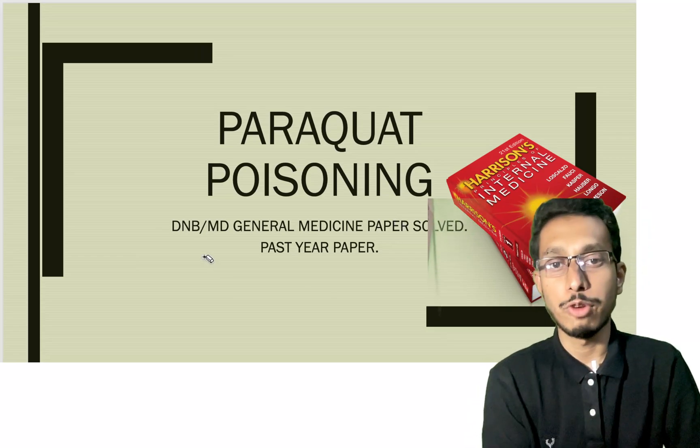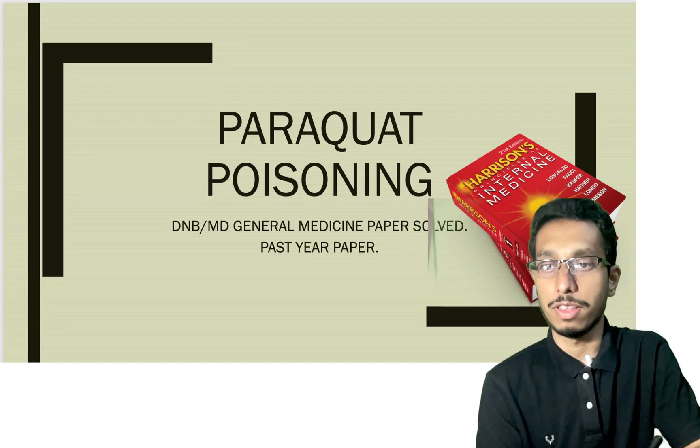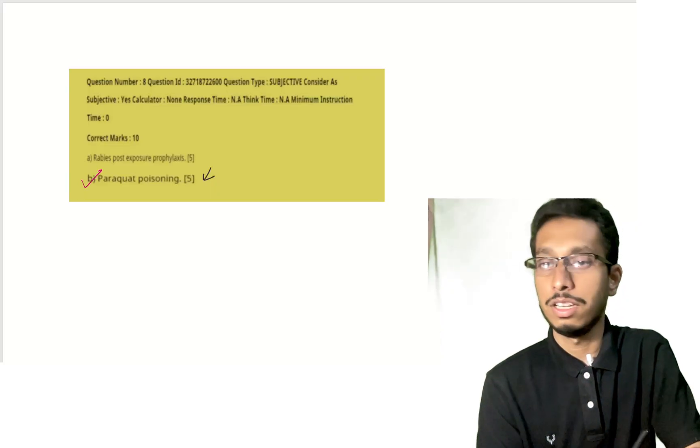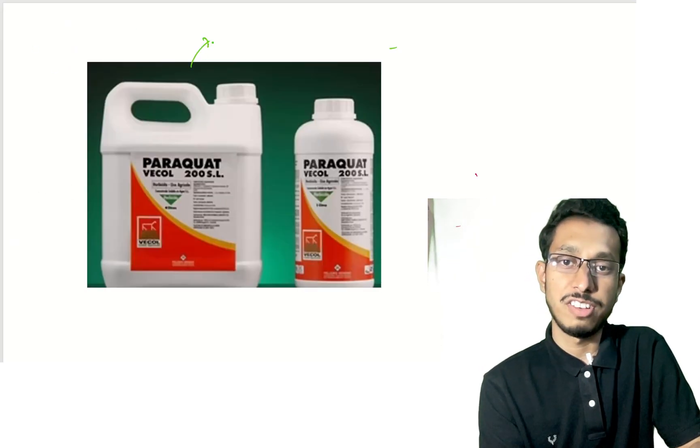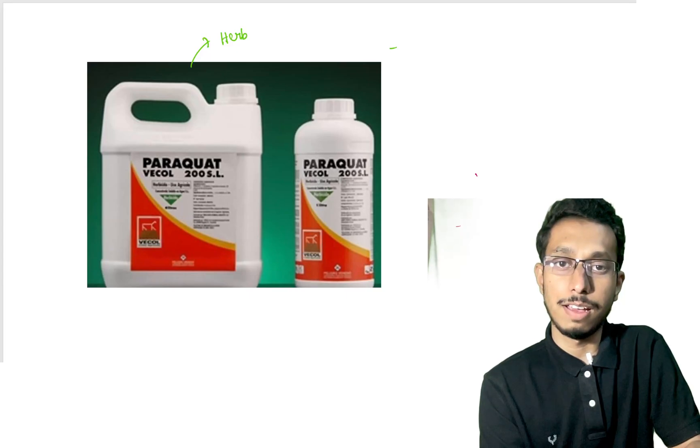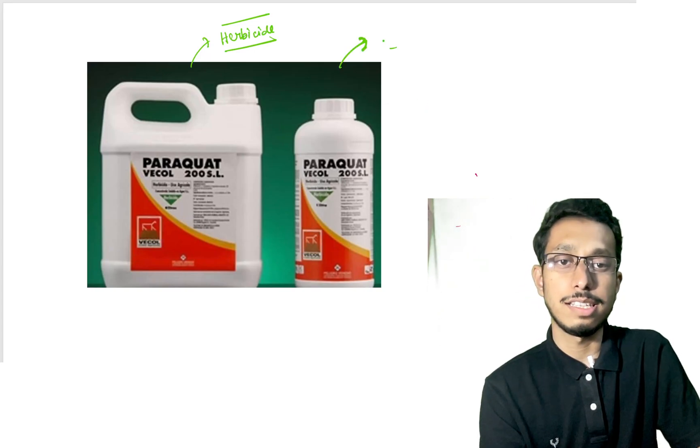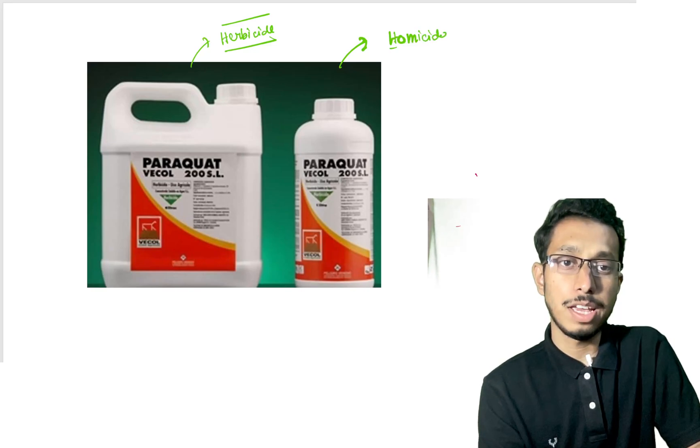Welcome to this video where we'll discuss a DNB past year paper question about paraquat poisoning. Paraquat is a herbicide mainly used in agriculture. The mechanism of poisoning is most cases homicidal and some cases accidental ingestion of the poison.